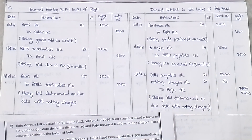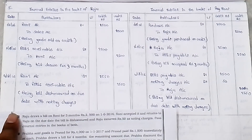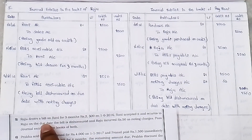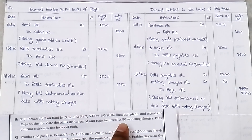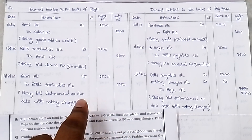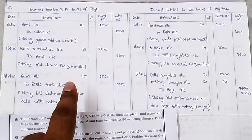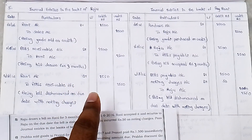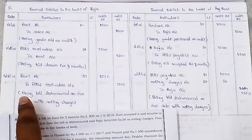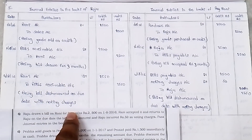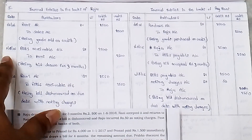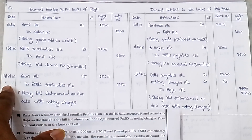On the due date, the bill is dishonored and Rajoo incurred 50 rupees noting charges. The noting charges must be included in the bills receivable amount. In Rajoo's books, we cannot show the noting charges separately — they are included in the bill amount.